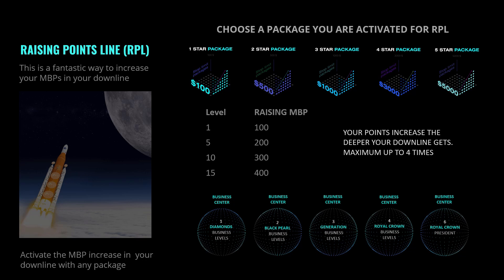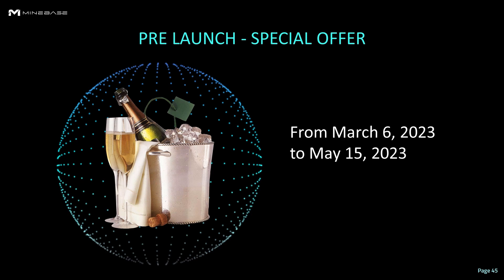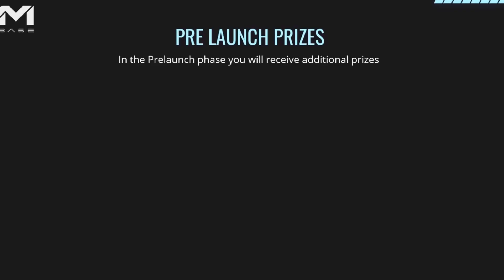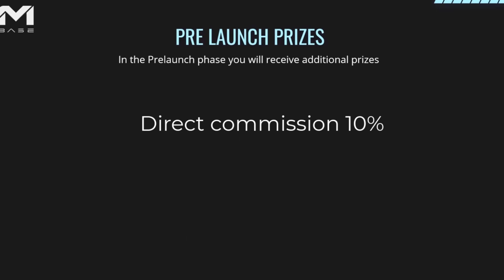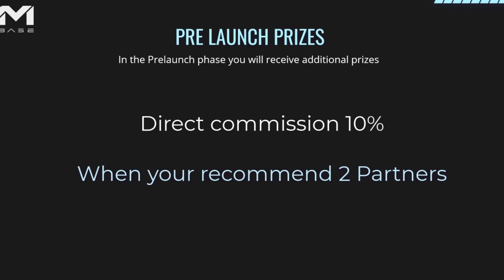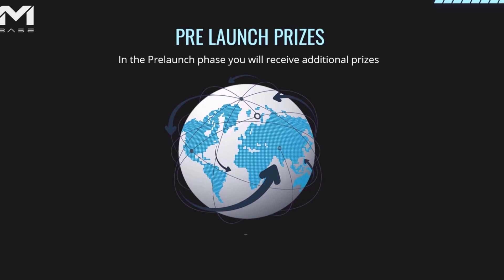You can get up to 4 times more points from 15 levels in your downline. Now, in the pre-launch phase, you have an exciting opportunity to win additional prizes. Until we launch in May, you will immediately receive your direct commission of 10%. But if you refer at least two partners with any packages, you will get double direct commission — 20%. The first 10% you get immediately and the second 10% at the launch of our marketing concept. All direct partners count, no matter how many you refer.